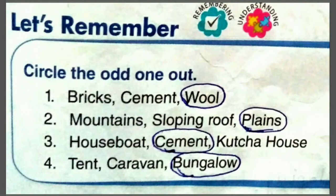Third set: house boat, cement and कच्चा house. तो ये तीनों में से अलग है cement. क्योंकि house boat और कच्चा house दोनों house के type हैं, और cement वो material है. इसलिए cement अलग है, तो हमें cement पे circle करना है.